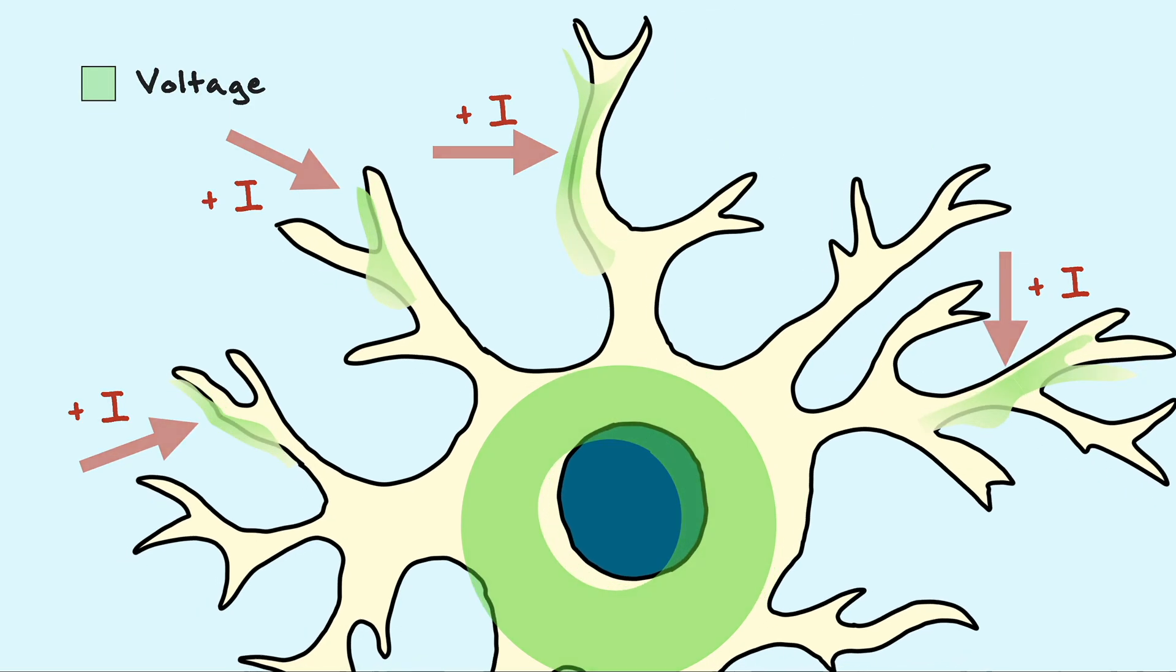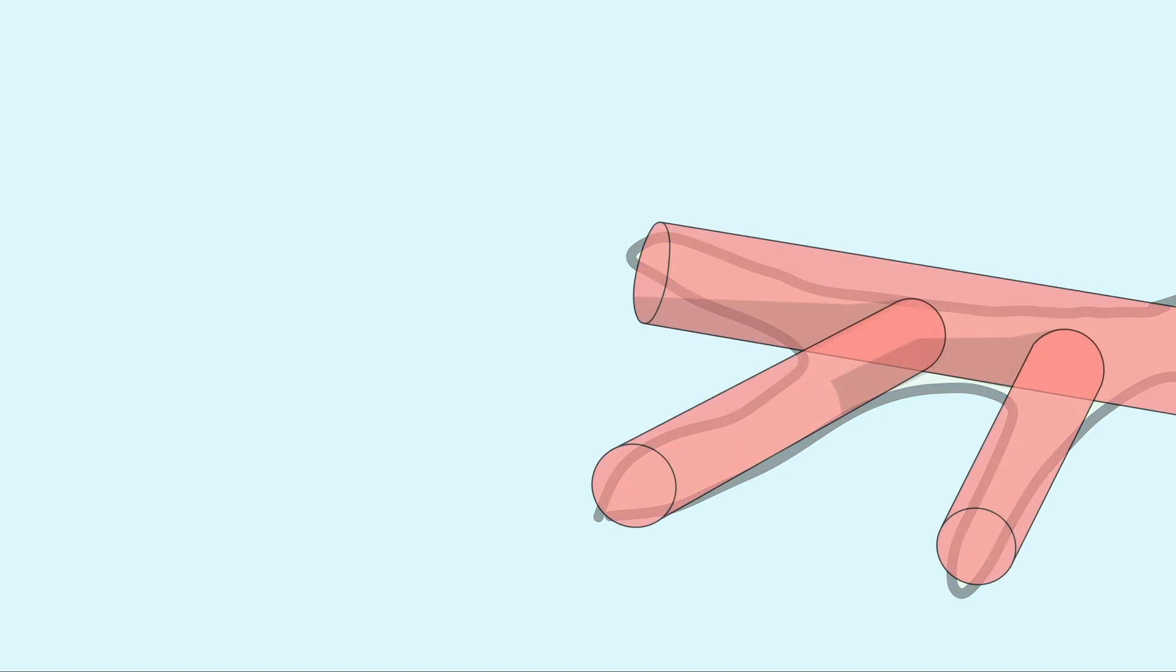The structure of dendrites can be very complex, but to approximate their shape in three dimensions, we can model them as cylinders. When we consider the inside of the cylinder, the cylinder is still part of the neuron, so you can imagine it as having a phospholipid bilayer shell and the inside filled with cytoplasm.